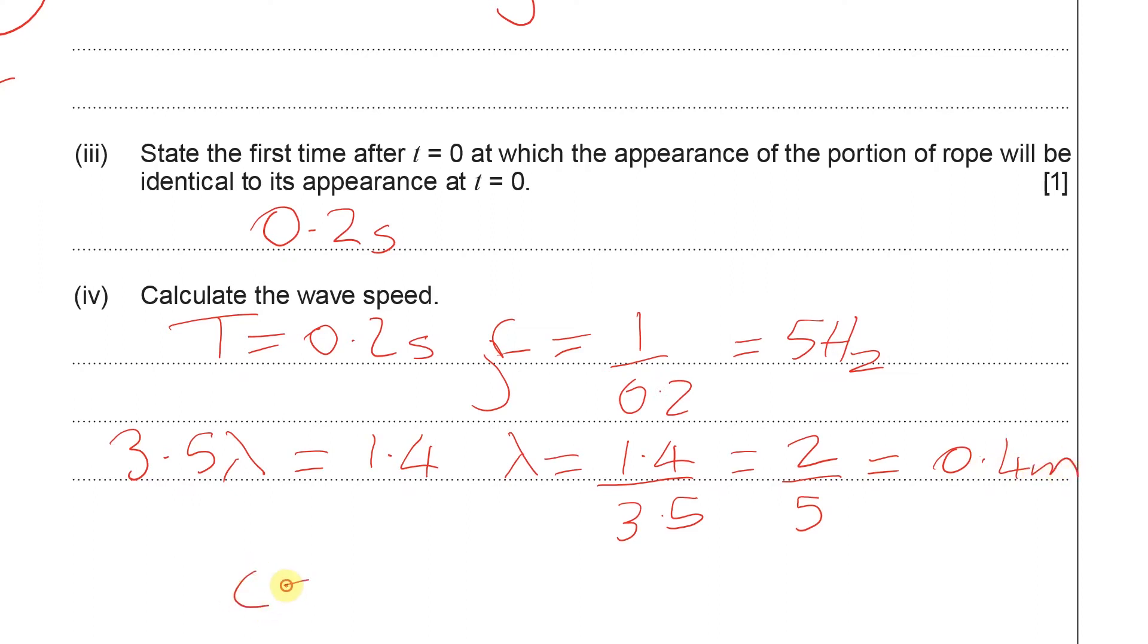Finally, we can calculate the speed by using the frequency times wavelength equation. So a frequency of 5 times a wavelength of 0.4 gives us a speed of 2 meters per second. And don't forget units.